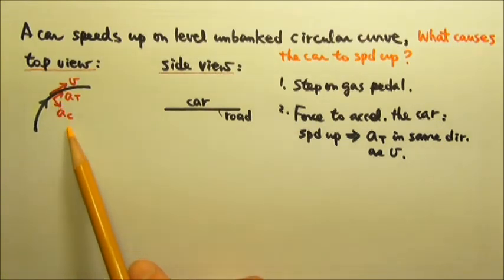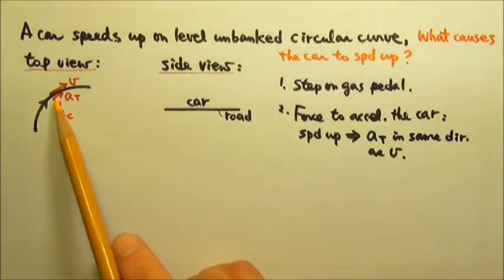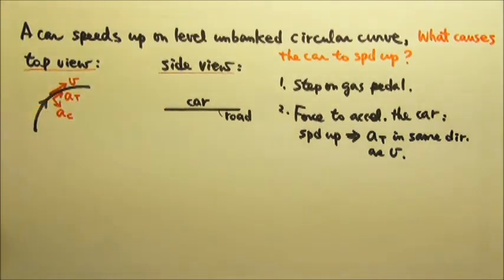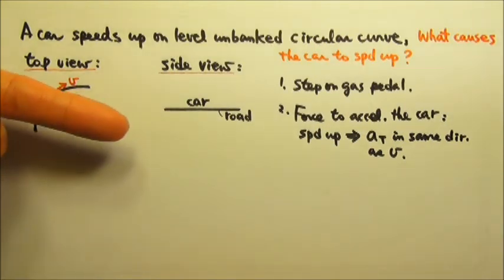And then there is a centripetal acceleration that is in the radial direction. The net acceleration is something like this, which means the friction has to be in a direction like that.